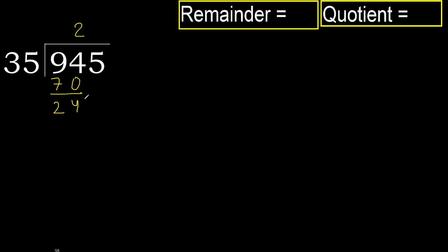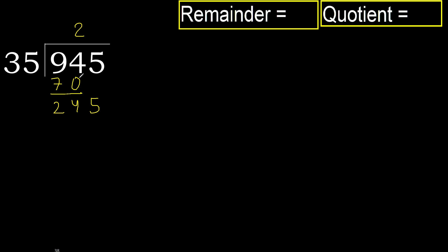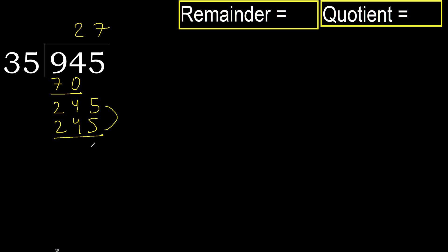Next: 245. 35 multiplied by 8 is greater. Multiplied by 7 is 245, which is not greater. Subtract: 245 minus 245 is 0.